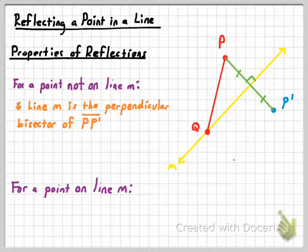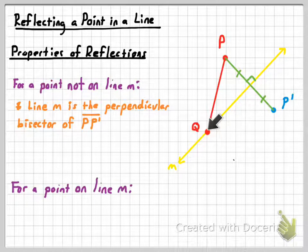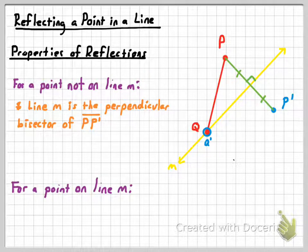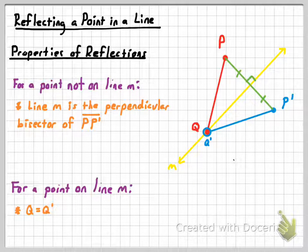For points actually on the line of reflection, such as point Q, if we want to make the image of Q the same distance from the line of reflection as Q itself, its image has to be exactly in the same place. Because Q is on the line of reflection, there's no distance between it and the line. Its image is exactly in the same location, so point Q and point Q prime are equal. Now we were reflecting a segment, so I'll go ahead and finish drawing that segment. You can see the symmetry — the reflection worked.